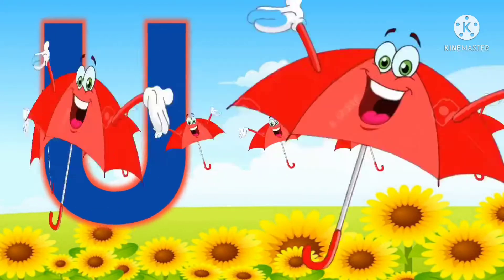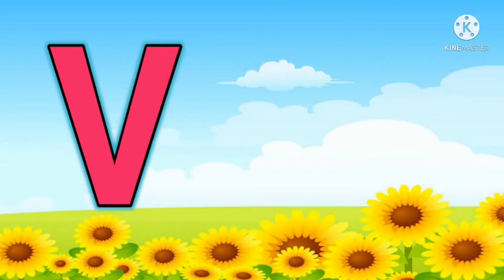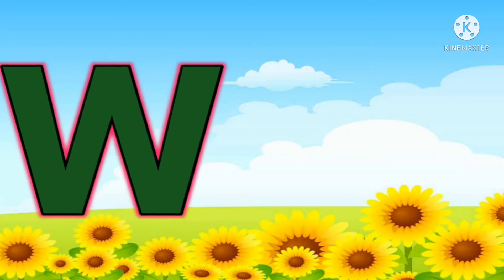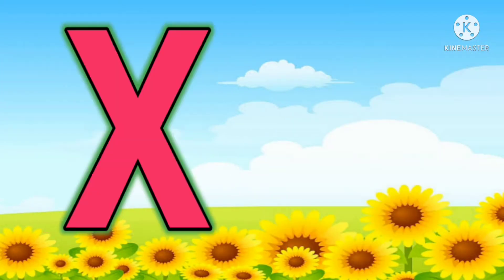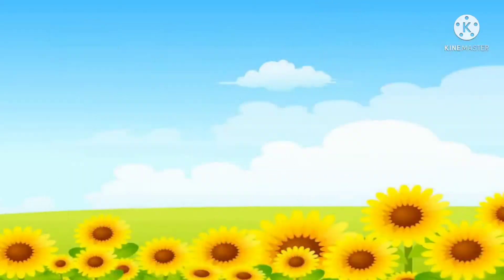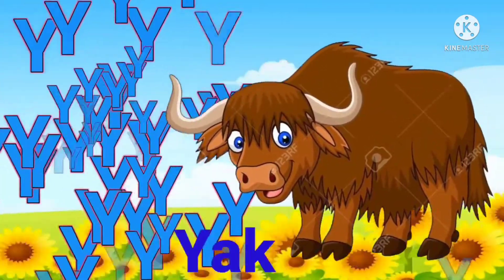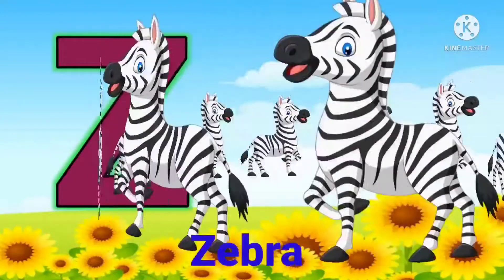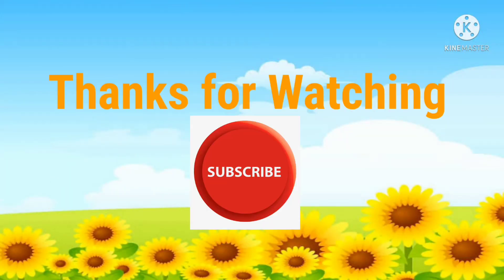U. U for umbrella. V. V for van. W. W for water. X. X for Christmas tree. Y. Y for yak. Z. Z for zebra. Thanks for watching. Please subscribe.